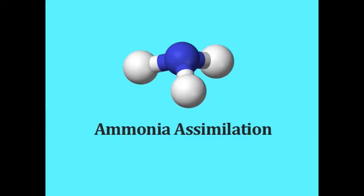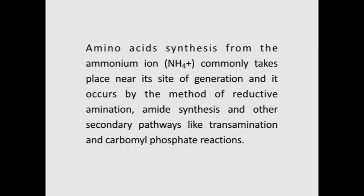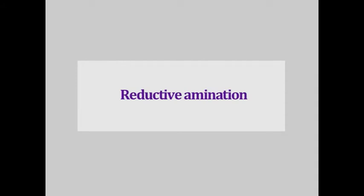Now let us learn about ammonia assimilation. The ammonia produced during biological nitrogen fixation by nitrogenase is immediately protonated at the physiological pH to form ammonium ion. Ammonium ion is toxic and is rapidly utilized for the synthesis of amino acids; excess ammonium ions are stored in amides. Amino acid synthesis from ammonium ions occurs near its site of generation by reductive amination, amide synthesis, and other secondary pathways like transamination and carbamoyl phosphate reactions.